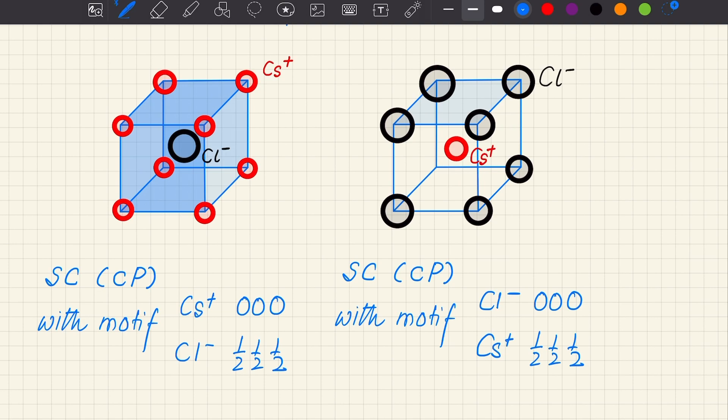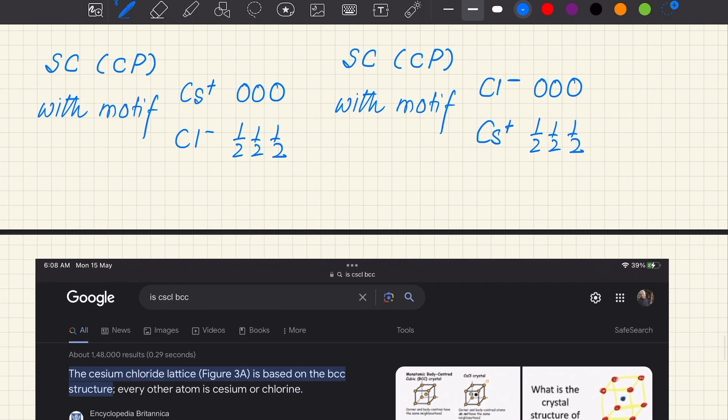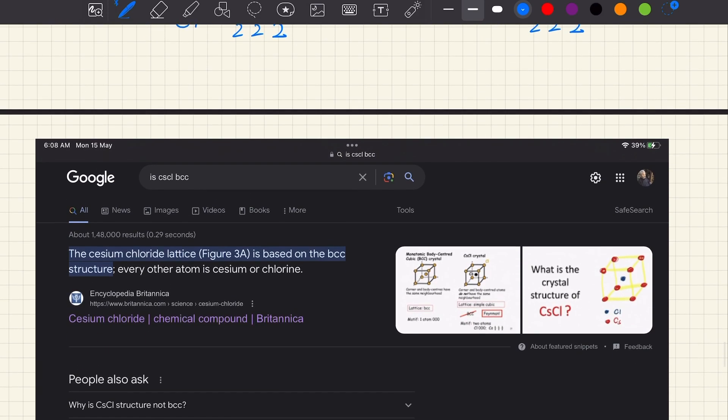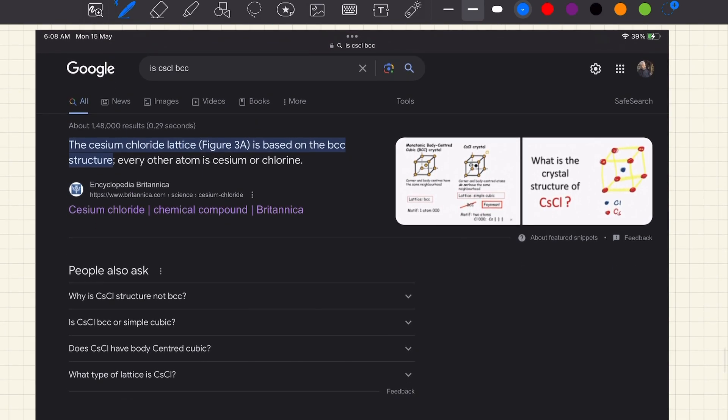So ChatGPT has failed our test, but is ChatGPT really to blame? ChatGPT is just a young student trying to learn from the web. If we check the web, I am giving it to Google: cesium chloride BCC. And the first answer is from Encyclopedia Britannica, a very respected encyclopedia, but it's again giving a wrong answer that cesium chloride is based on BCC structure.